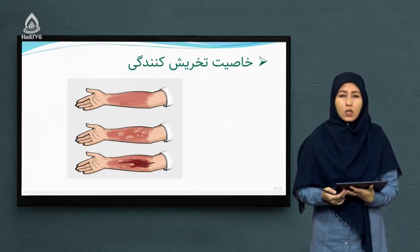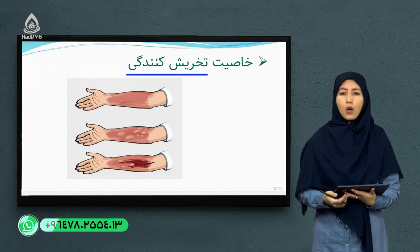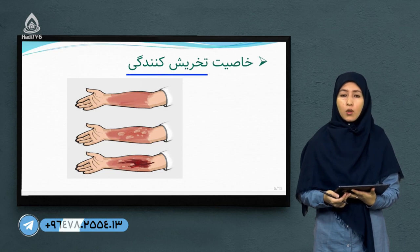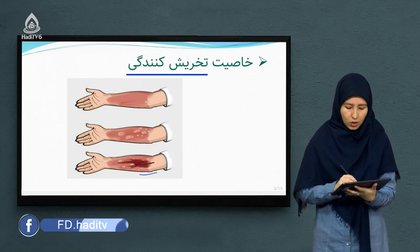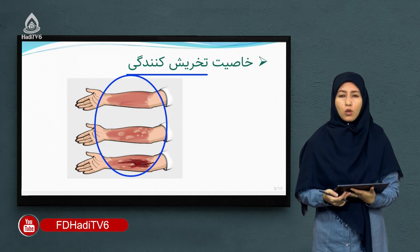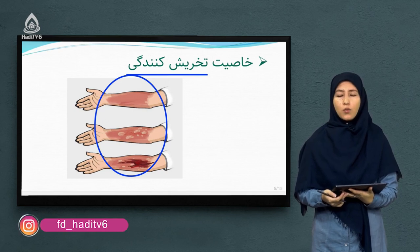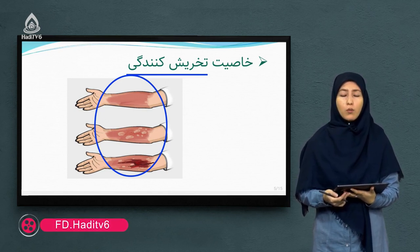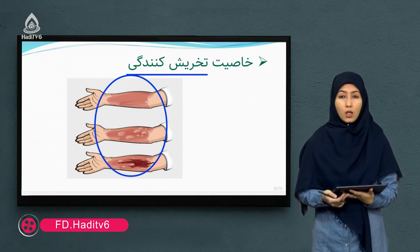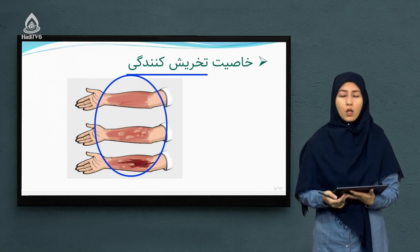از جمله خواص فیزیکی دیگر تضاب‌ها، دارای خاصیت تخریش‌کنندگی است؛ یعنی به انساج بدن و همچنان منسوجات آسیب می‌رساند. در صورت تماس مستقیم با تضاب‌ها، باعث می‌شود که بر روی پوست دست انسان تخریش‌شدگی ایجاد شود. شاگردان عزیز، در محیط‌های لبراتواری هنگام کار با تضاب‌ها حتماً نکات ایمنی را رعایت کنید.